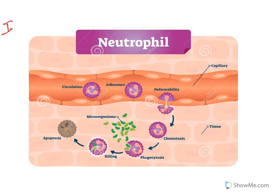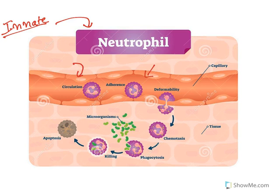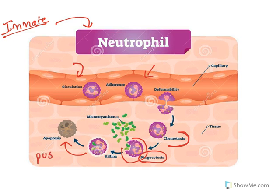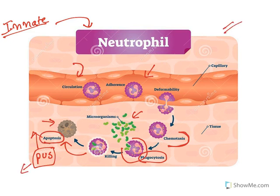In innate immunity, neutrophils are the major mediators. When someone gets an infection, the neutrophil — circulating in blood — attaches to endothelial cells and moves to the site of infection; this process is called chemotaxis. It then engulfs the microorganism through phagocytosis, kills the cell, and also undergoes apoptosis. The pus seen at an infection site is because of neutrophils.